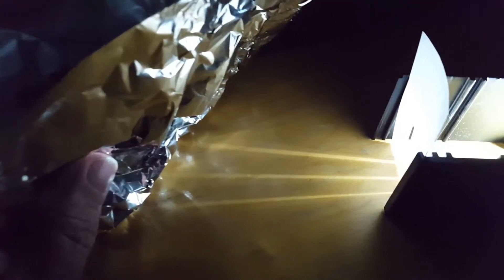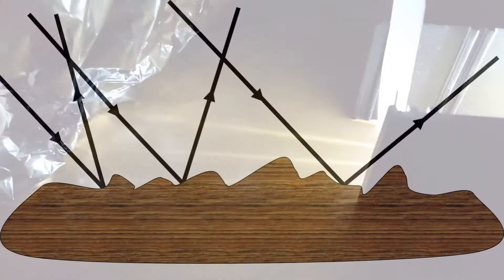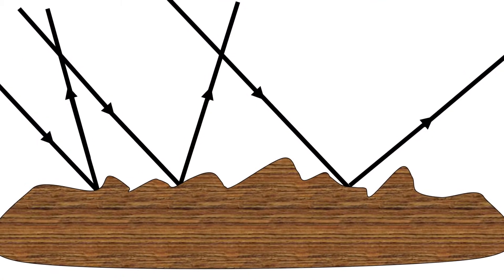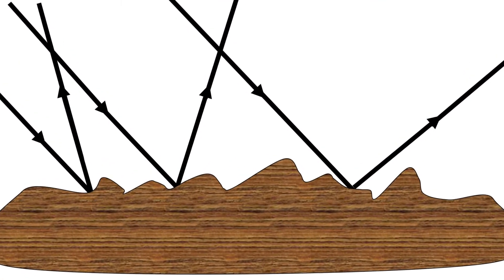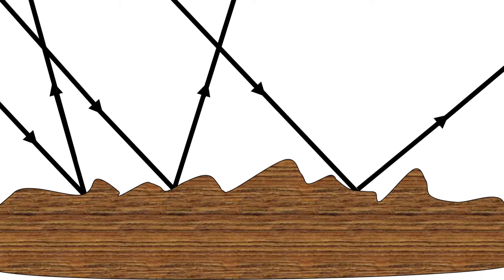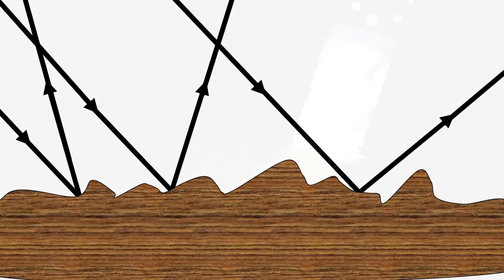Other opaque objects like woods, metals, and other everyday objects have very rough surfaces. In fact, if we look at them under a microscope they're incredibly bumpy. Therefore the light is scattered in all sorts of different directions. This is called diffuse reflection.